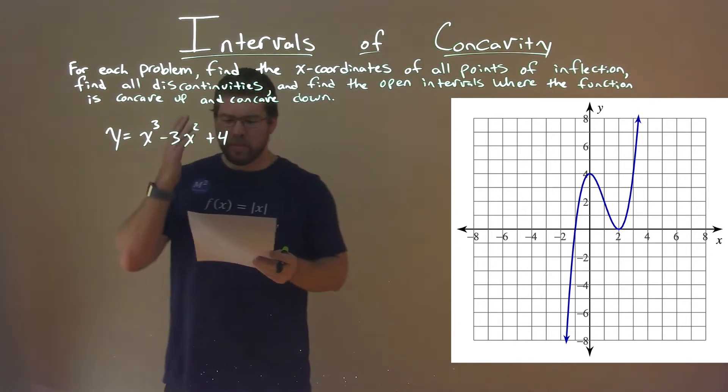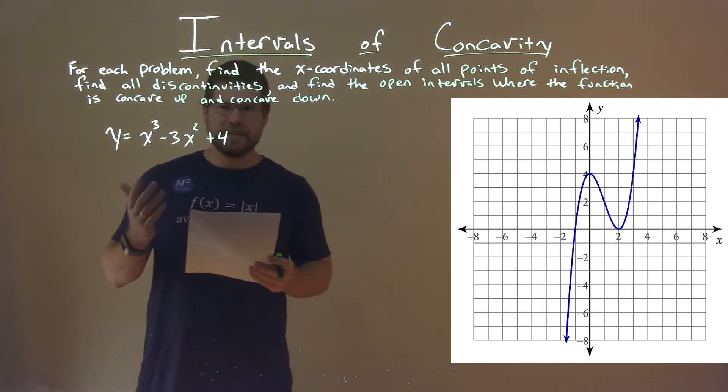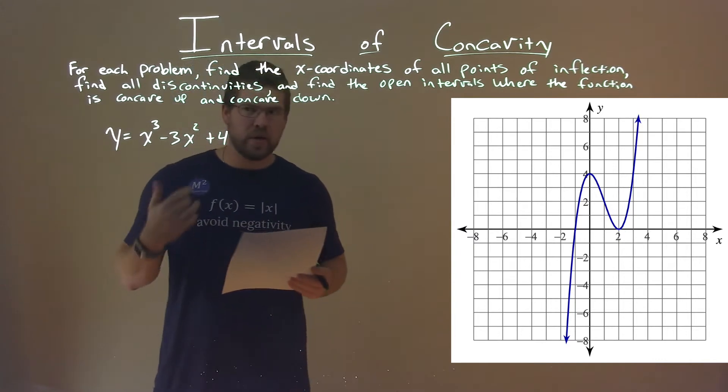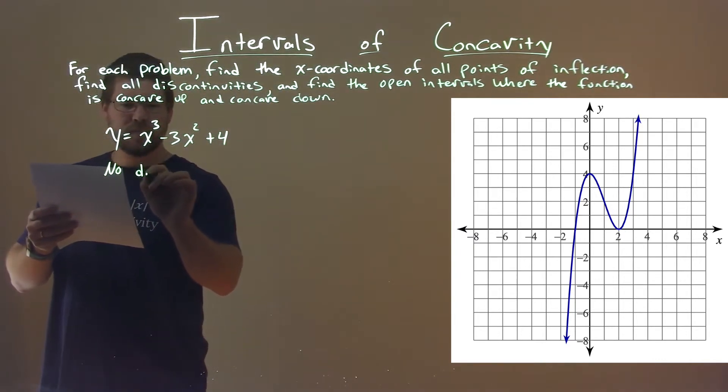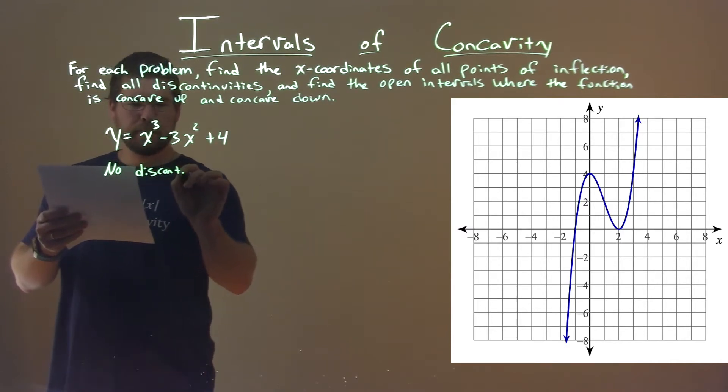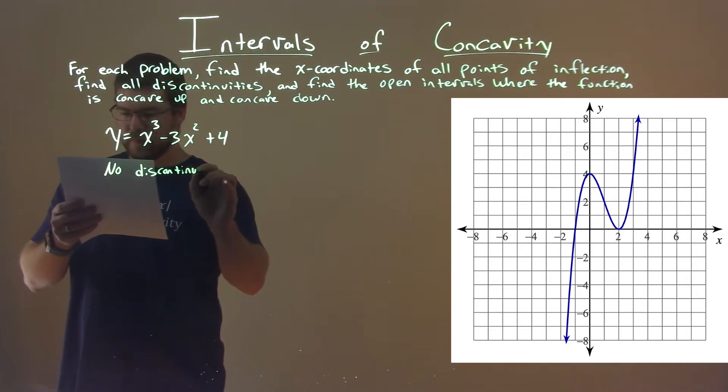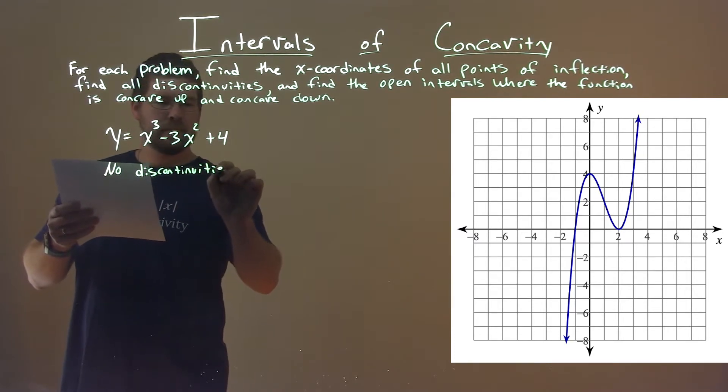Now, we have our polynomial function here, and it really is continuous everywhere. So, right off the bat, we can say no discontinuities exist.